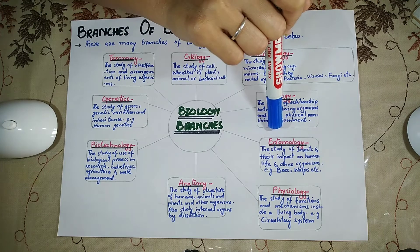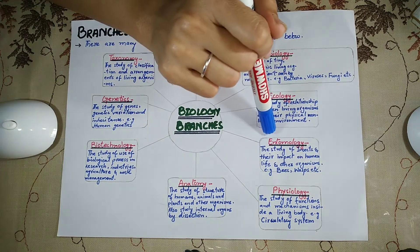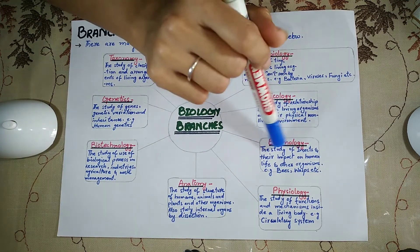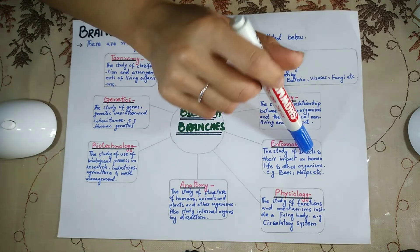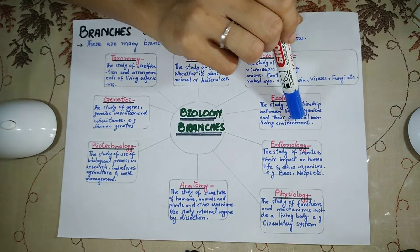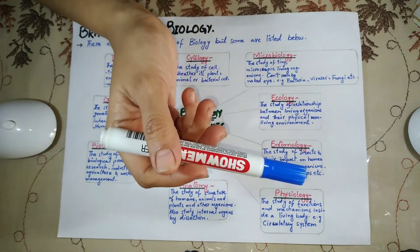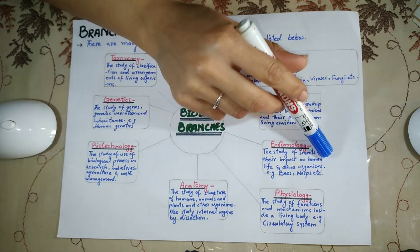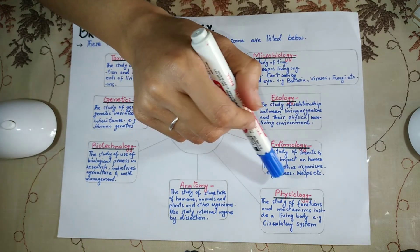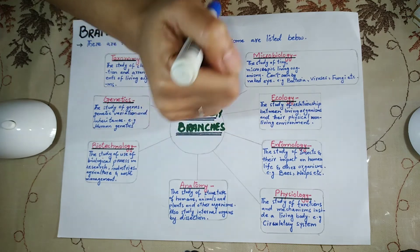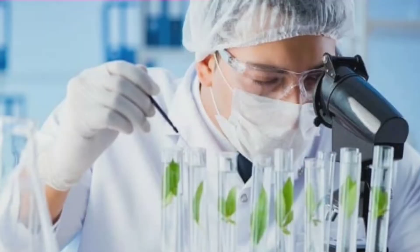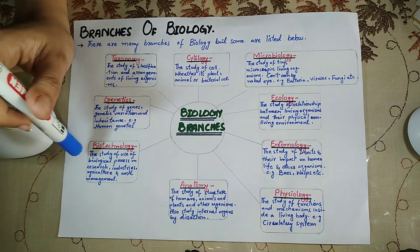Entomology is also a combination of two Greek words: 'entomon' means insects and 'logy' means to study. The study of insects and their impact on human life and other living organisms is called entomology. Examples include bees, wasps, beetles, spiders, etc.